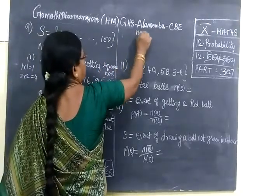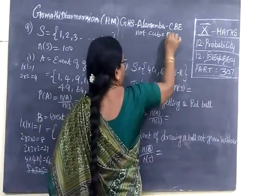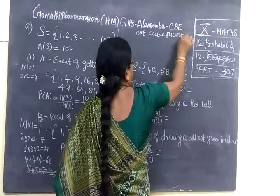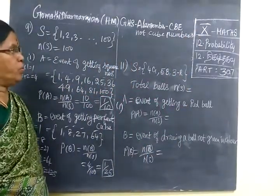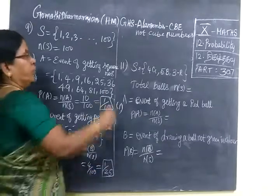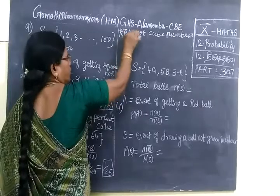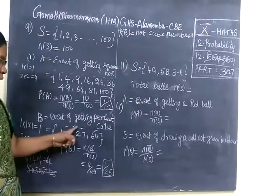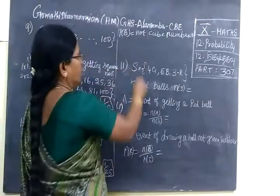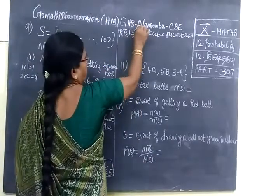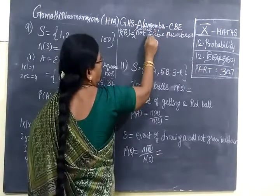But in the question it is asked this: not cube number. Probability of selecting numbers which are not cube numbers. Cube numbers are here, and then that can be written as P(B̄). P(B) is selecting cube number. P(B̄) means selecting not a cube number.